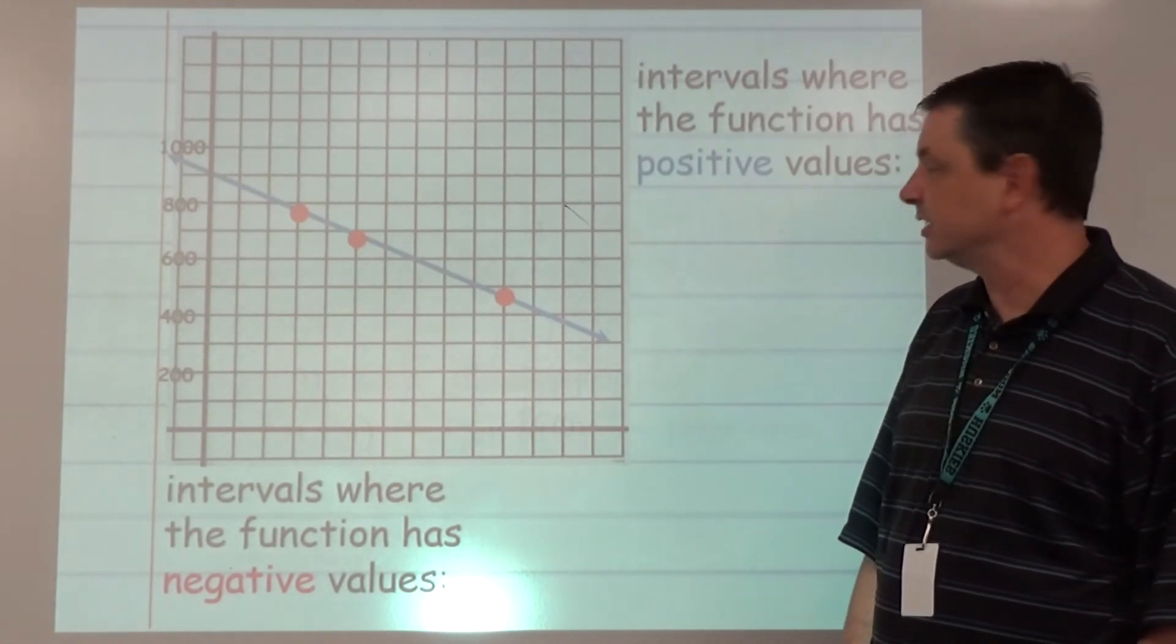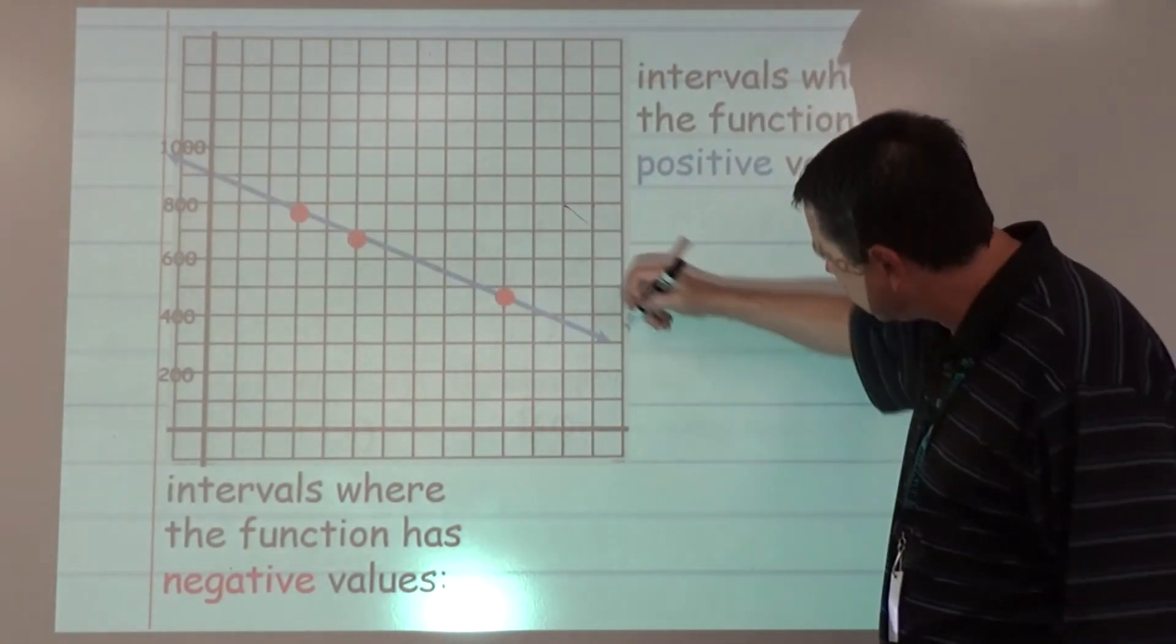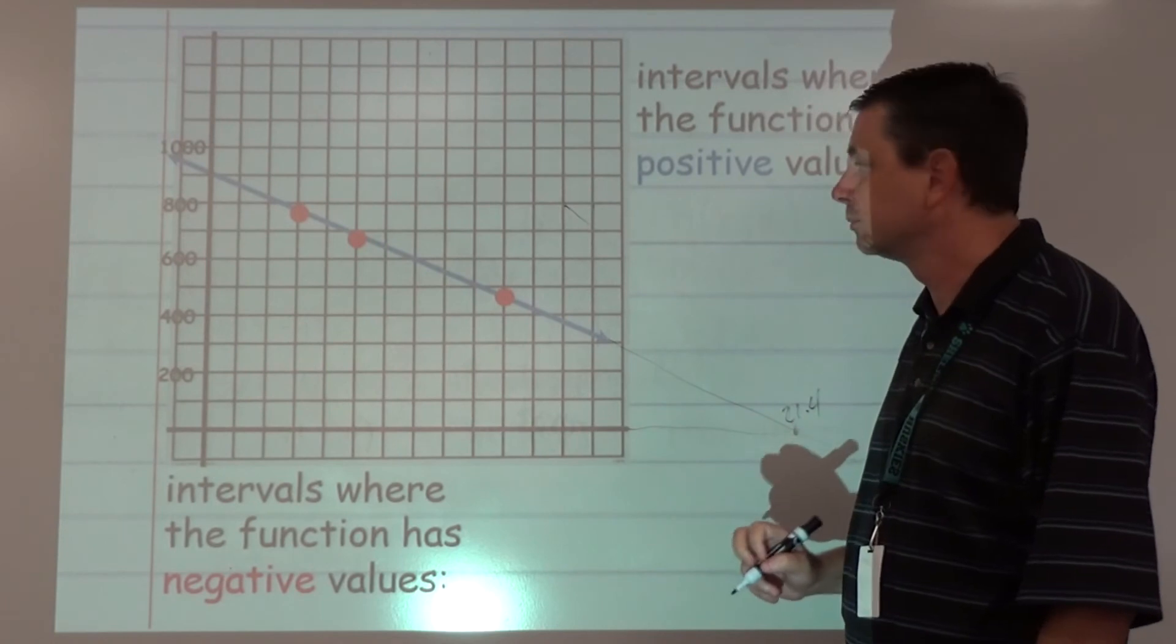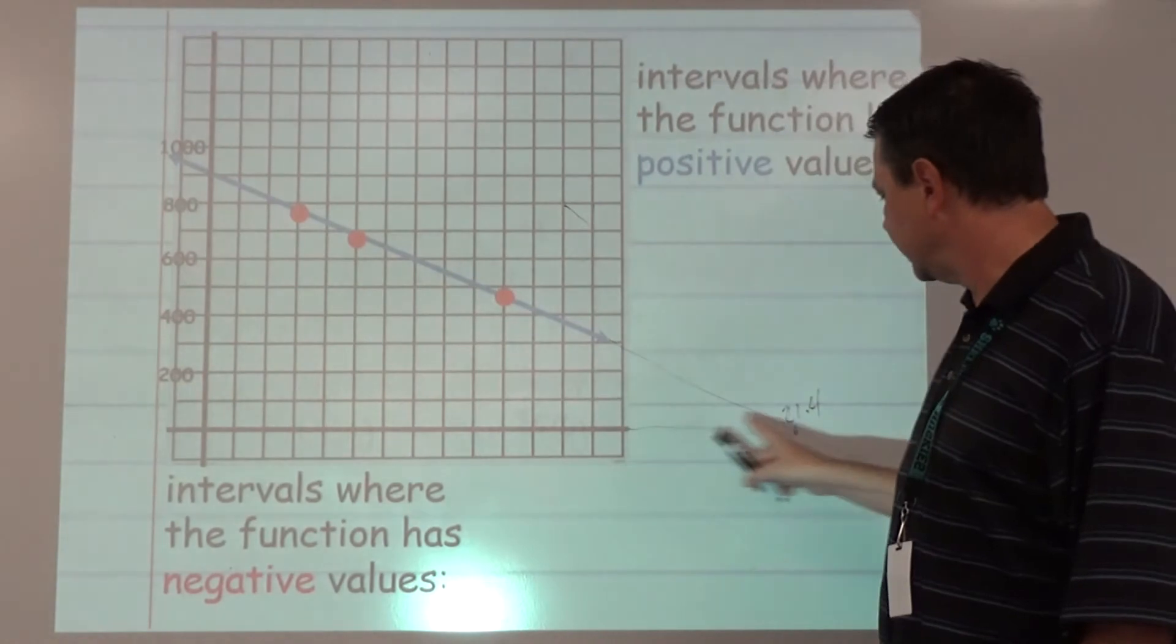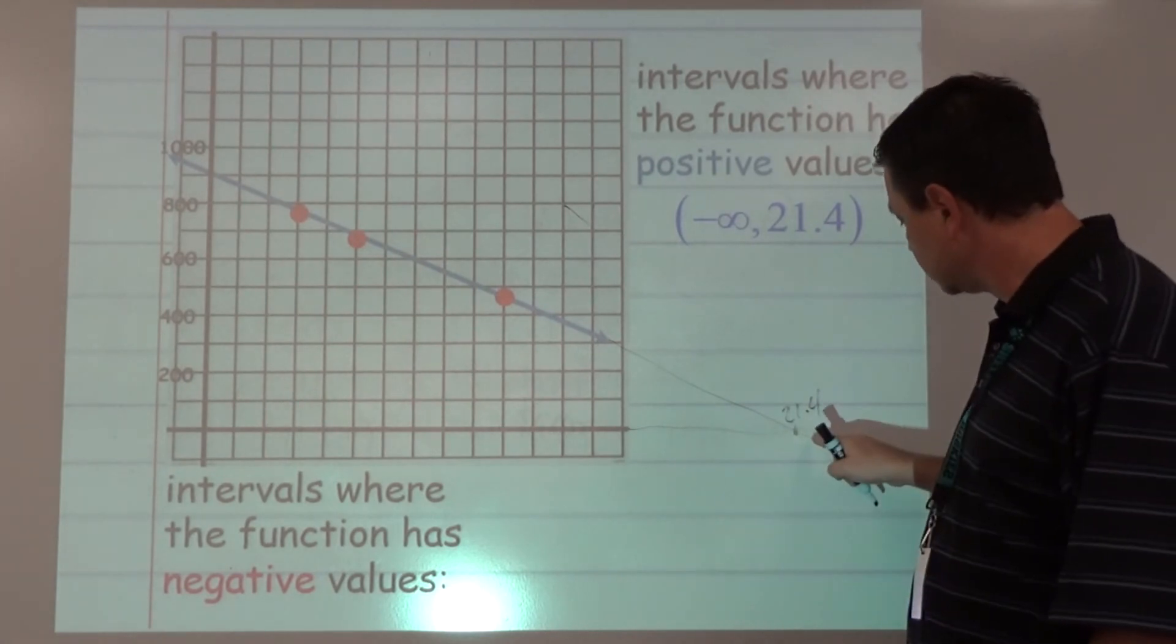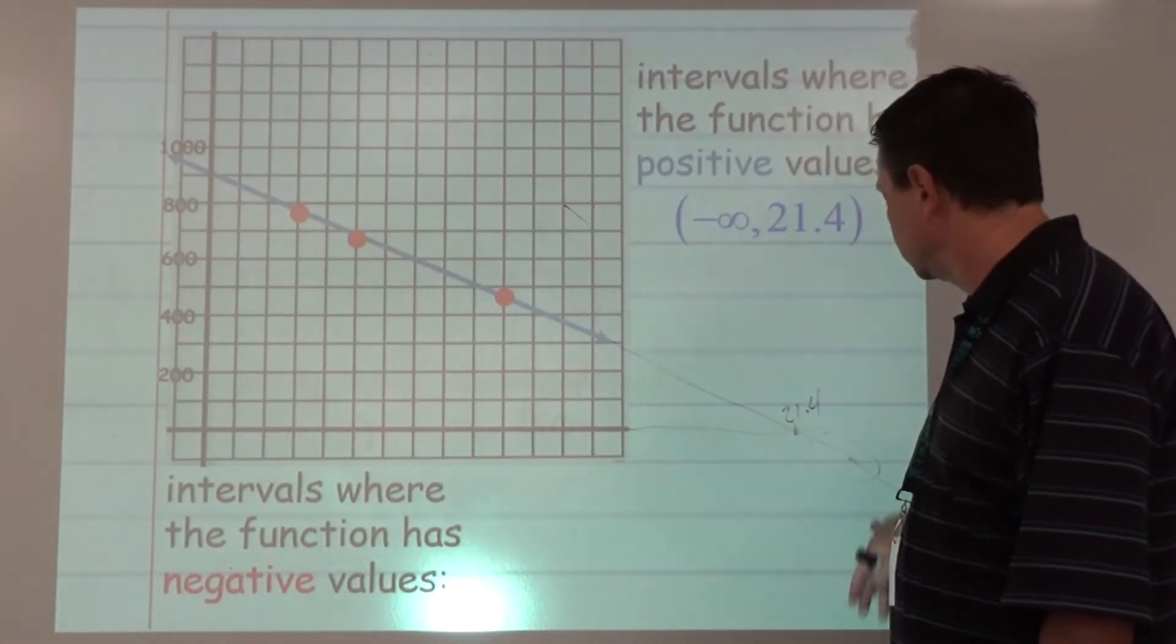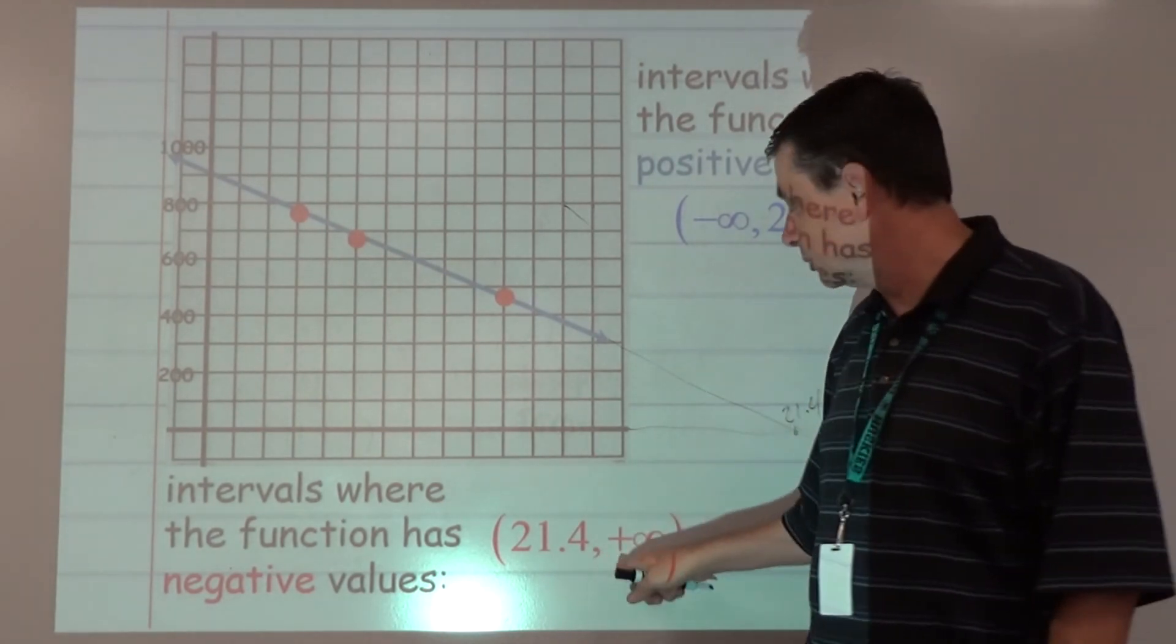Where do we have positive function values? Where are we above? All of this is above. Remember we just found out that if we keep going along here, it's going to hit at about 21.4, so it's above from negative infinity all the way to there. Where is it below? This part of the graph going forever that way is going to be below, which is what negative function values are, so from 21.4 on forever to positive infinity.